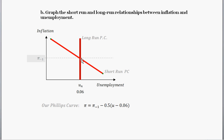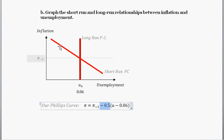If the unemployment rate is below the natural rate, the Phillips curve tells us inflation will be a bit higher. If unemployment is above the natural rate, inflation will be a bit lower. The exact short-run relationship is given by the slope of the Phillips curve, which is negative 0.5. So for every 1% increase in unemployment, we get a negative half percent decrease in the inflation rate.